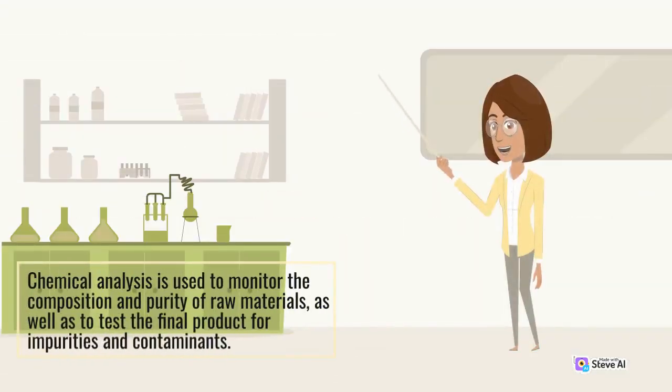Chemical analysis is used to monitor the composition and purity of raw materials, as well as to test the final product for impurities and contaminants.